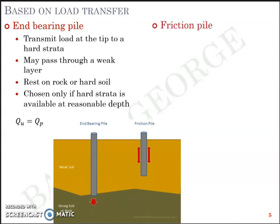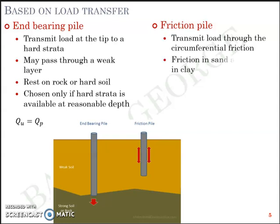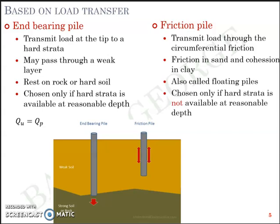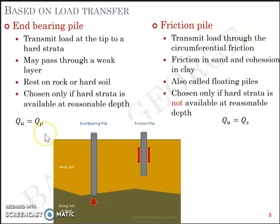The second type is the friction pile. It transmits the load through circumferential friction — friction in sand (cohesionless soil) and cohesion in clay. Friction is the term used for sandy or cohesionless soil, and cohesion is the term used for clay soil. Friction piles are also called floating piles and are chosen only if hard strata is not available at a reasonable depth. For friction piles: QU = QS, where QS is the load taken at the circumference. These two classifications are theoretical — in practice we rarely encounter a purely end-bearing or purely frictional pile. Everything is usually a combination: QU = QP + QS, with varying shares for QP and QS.